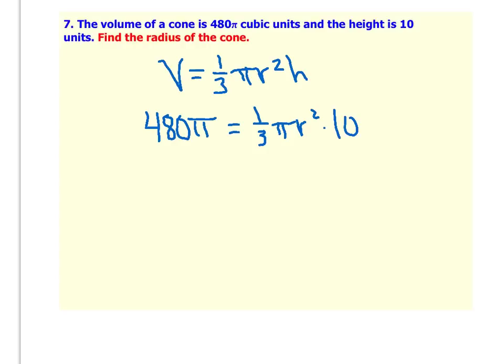The easiest way to do this problem when you're solving this is to get rid of that fraction. To get rid of a fraction, remember we always multiply by the reciprocal. So multiply both sides by 3. You get 1,440 pi equals pi r squared times 10.